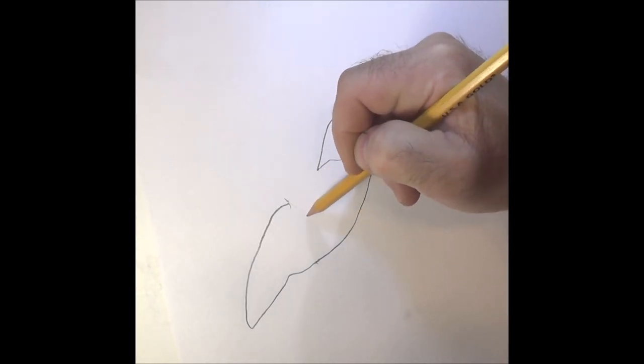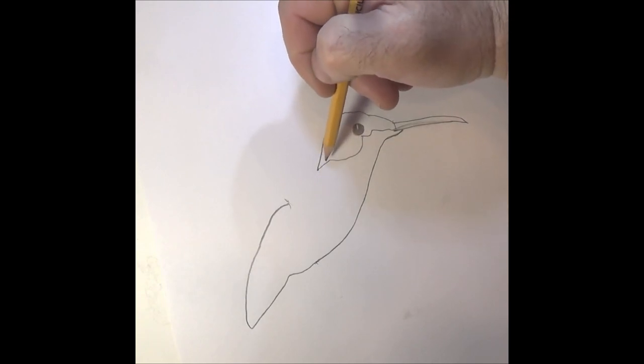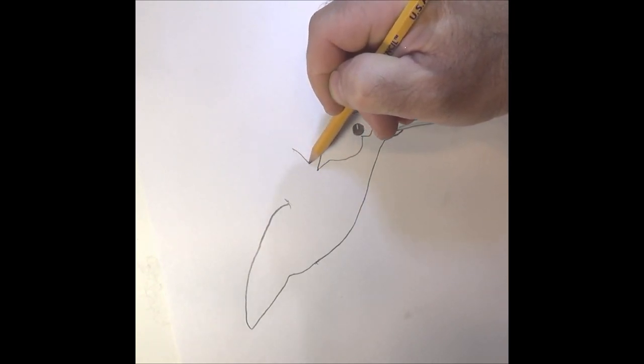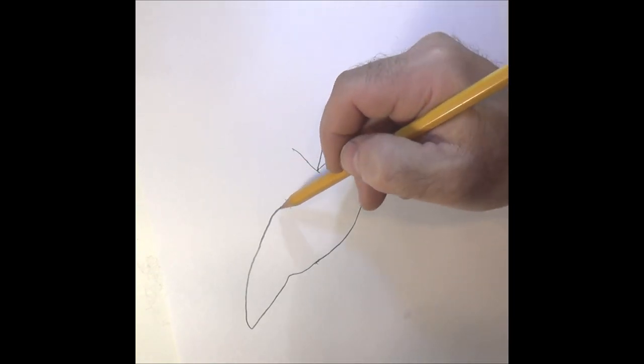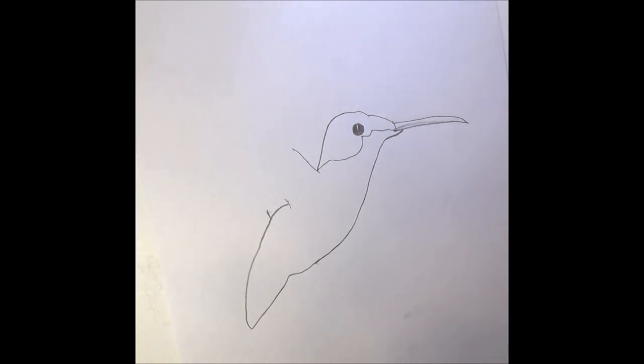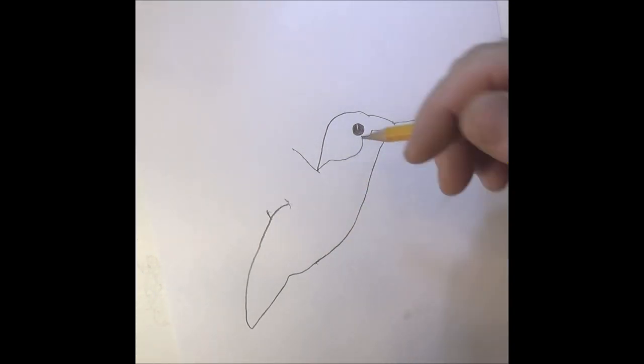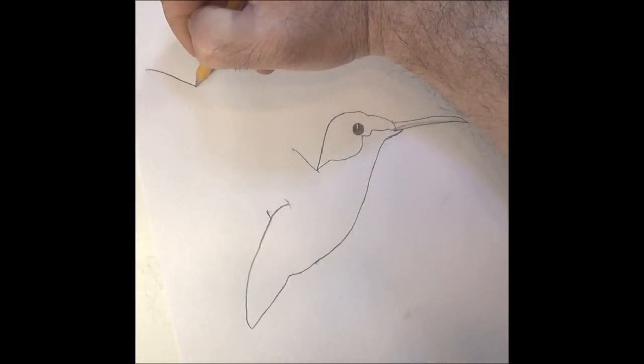We're gonna put his wings right in here. Come up here to his body by the head and draw a line about right there. I'm gonna put a guide line right about here because that's where I want the other side of his wing.